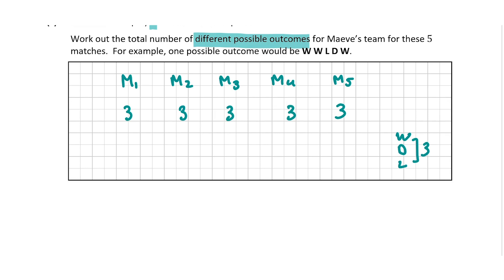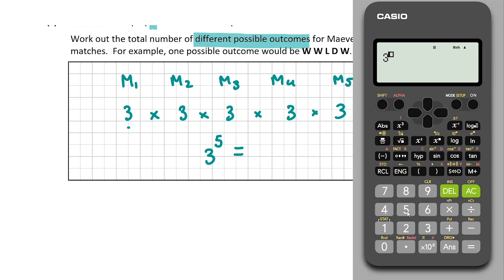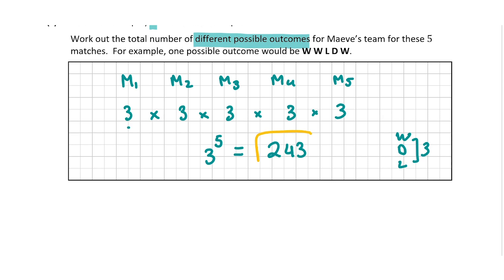Now we apply the AND/OR rule: when we say 'and' we multiply. There are three possibilities for match one and three for match two and so on, giving three to the power of five, which is three by three by three by three by three. Three to the power of five equals 243 different possible outcomes. For this answer you get 10 marks.